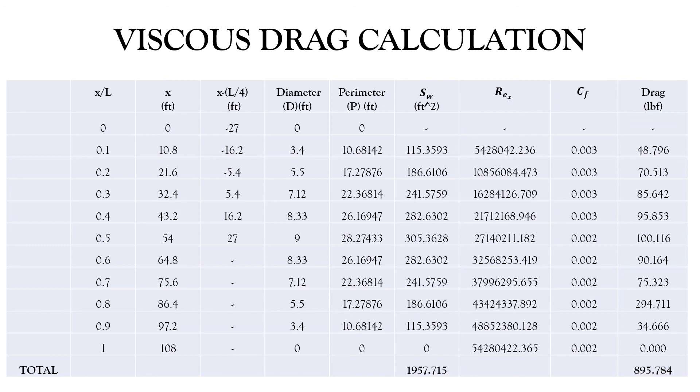Finally, we will get the drag. The drag formula consists of q, that is dynamic pressure, into coefficient of friction into F into Q, and also the surface weighted area. After all, we sum all the forces and we obtain our total drag as 895.78 LBF.